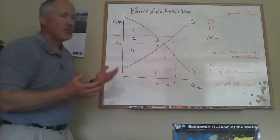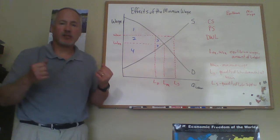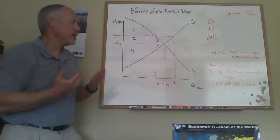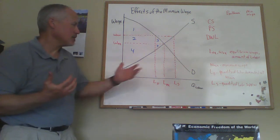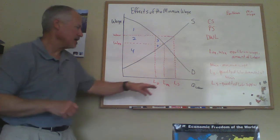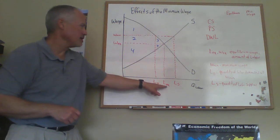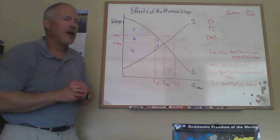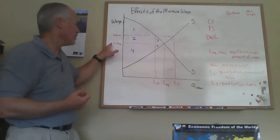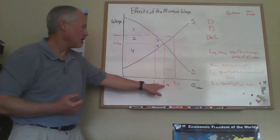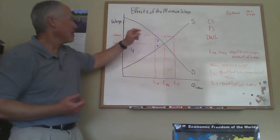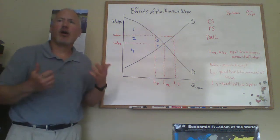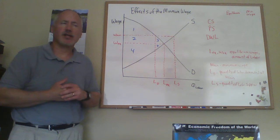This is a simple supply and demand diagram, and a minimum wage is a price floor that you impose in the labor market. The diagram has supply and demand drawn out, and the equilibrium would be where the demand and supply curves intersect. We have the equilibrium wage and the equilibrium quantity of labor, and then we have a minimum wage set above the equilibrium wage.